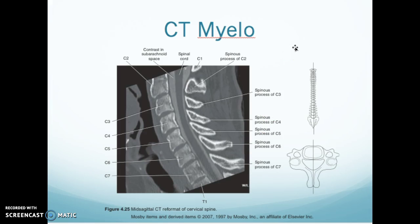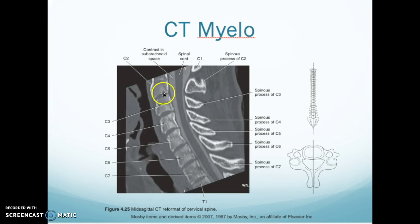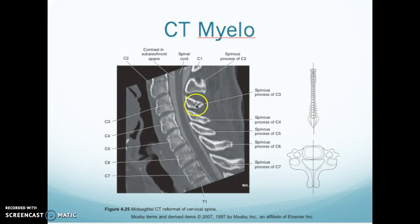This is a CT myelogram — contrast is injected into the CSF, so the spinal cord will not have contrast in it; the contrast will be in the CSF, not in the cord. Here is C1, C2 — you can tell C2 kind of has that seal-nose appearance. That little line there makes me a little nervous. Here's C2, 3, 4, 5, 6, 7, and T1 — exactly the minimum. You can see your spinous processes of C2 through C7. It's hard to count and we shouldn't be clipping that posterior piece off.